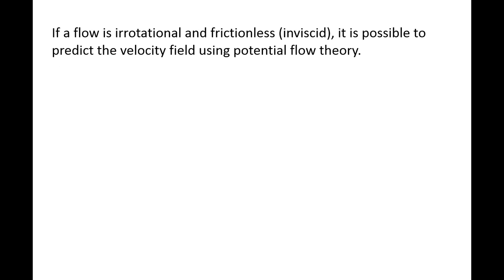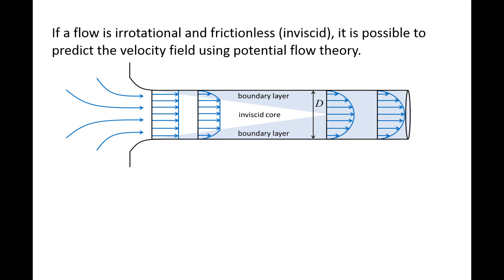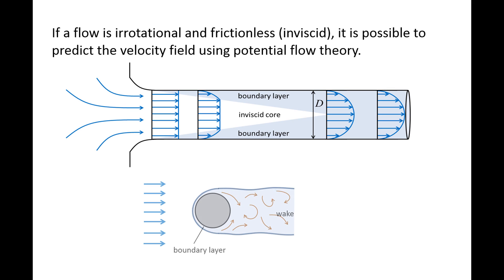One reason why irrotational flows are of interest in fluid mechanics is because if a flow is irrotational and frictionless, which is also called inviscid, it is possible to use potential flow theory to predict the velocity field. A couple of examples where flows can be approximated as irrotational and inviscid are the central core of a flow in the entrance region of a pipe, and in the area surrounding the boundary layer and wake region of an object immersed in a fluid, such as a ball traveling through air. The flow inside the boundary layer in both situations is not irrotational or inviscid, and potential flow theory cannot be used to predict the velocity field in those regions.